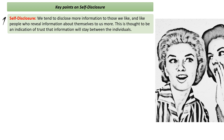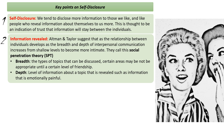There are different types of information that can be shared between two individuals. Altman and Taylor suggest that as a relationship develops over time, the breadth and depth of the interpersonal communication — the conversations that these two people have — will increase from a shallow level and will slowly become more intimate as the relationship improves. This is called social penetration theory: an increase in the breadth and depth of communication over time as relationships improve.